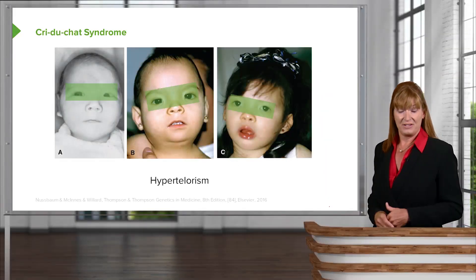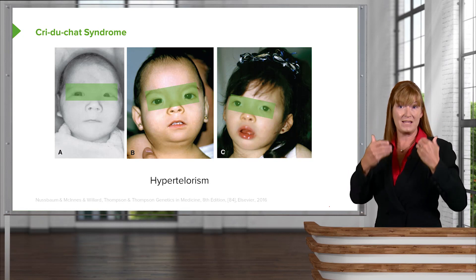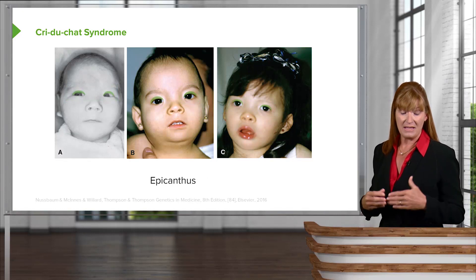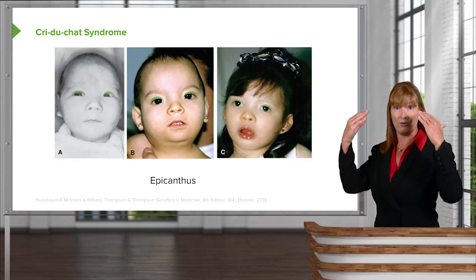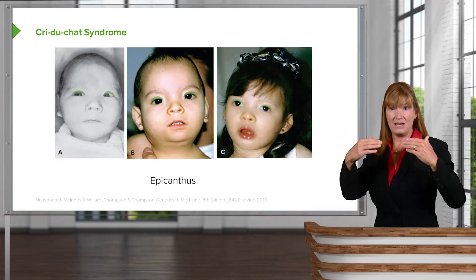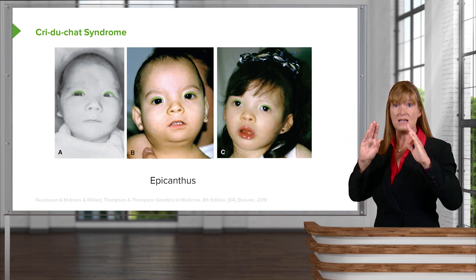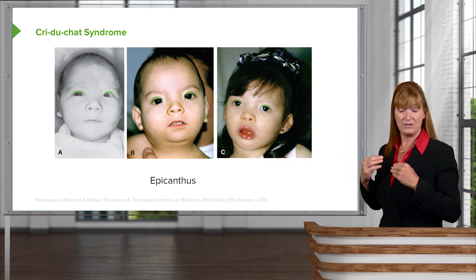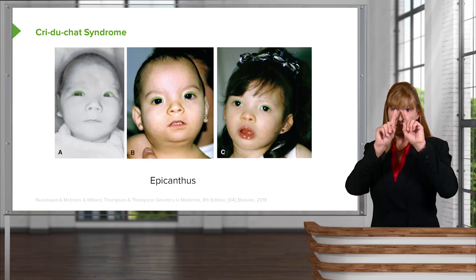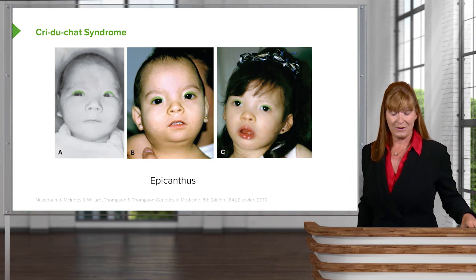Here are some of the symptoms. We have hypertelorism — meaning a larger space between the eyes or a large bridge of the nose. Another feature is epicanthus. You can see the epicanthal folds marked in this picture, which is the vertical fold seen on either side of the bridge of the nose — present in each of these images. Epicanthus refers specifically to having this extra vertical fold on either side of the bridge of the nose.